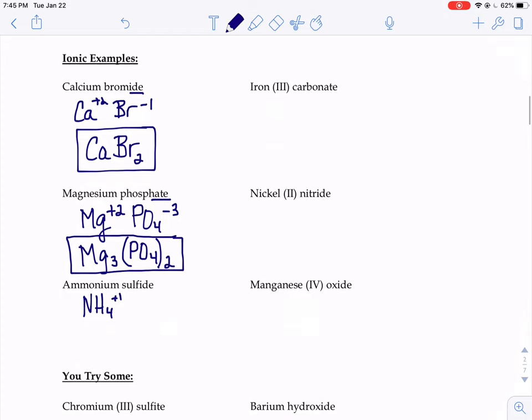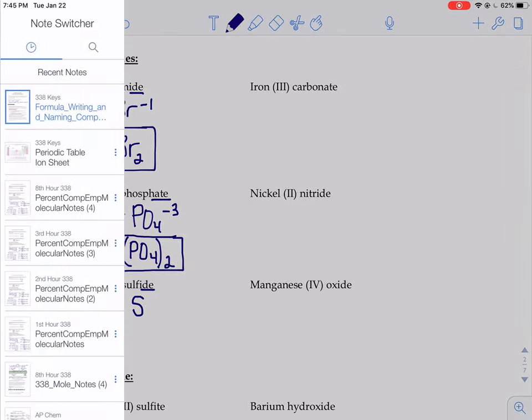Then our anion piece is sulfide. Sulfide, when you have that -ide ending, it's generally whatever element it kind of sounds like. Well sulfide kind of sounds an awful lot like sulfur. So I'm going to write the symbol for sulfur down.